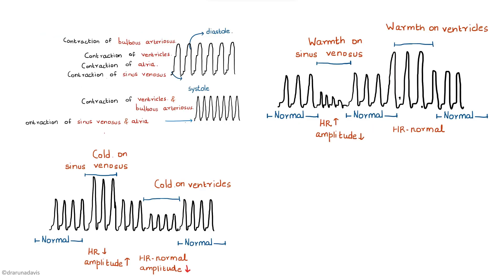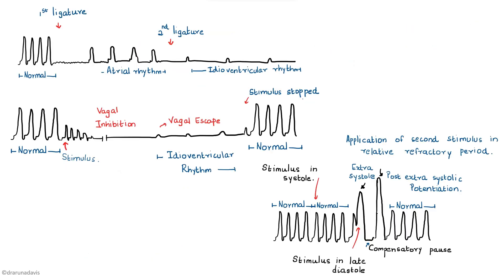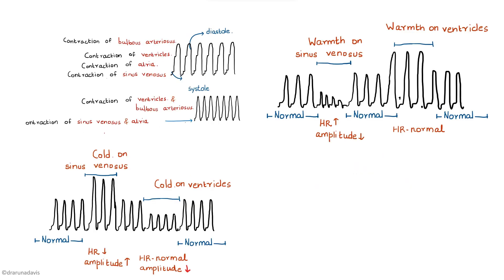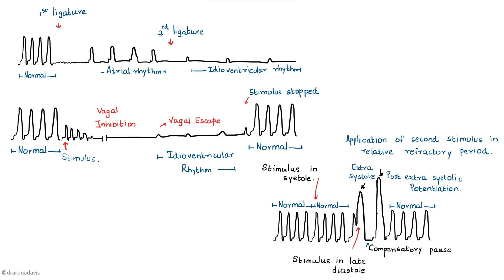In this video we have discussed the normal cardiogram, the effect of warmth and cold on sinus venosis and ventricles, the stannous ligature, the effect of vagal stimulation, and we have demonstrated the refractory period. I hope these graphs are clear. Thank you.